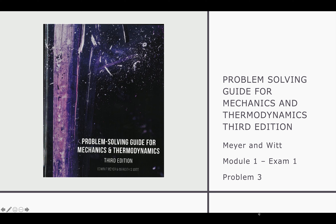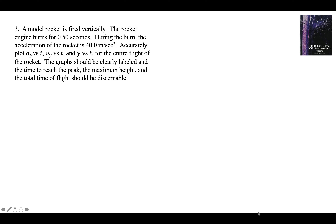This is a walkthrough of problem three on exam one of module one in the book Problem-Solving Guide for Mechanics and Thermodynamics. Problem three: a model rocket is fired vertically. The engine burns for half a second. During the burn, the acceleration of the rocket is 40 meters per second squared upwards. Plot acceleration versus time, speed versus time, and height versus time for the entire flight. The graph should be clearly labeled, and the time to reach the peak, the maximum height, and the total time of flight should be discernible from the graph.